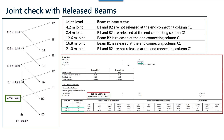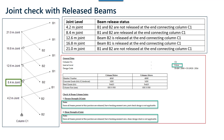Taking the example of column C1 with levels at 4.2, 8.4, 12, 16 and 21 meters, at 4.2 both beams B1 and B2 are not released and are connected to the joint, so both are considered for the joint check. At 8.4, both beams connecting to this joint are released, so both beams are ignored when the joint check is performed.